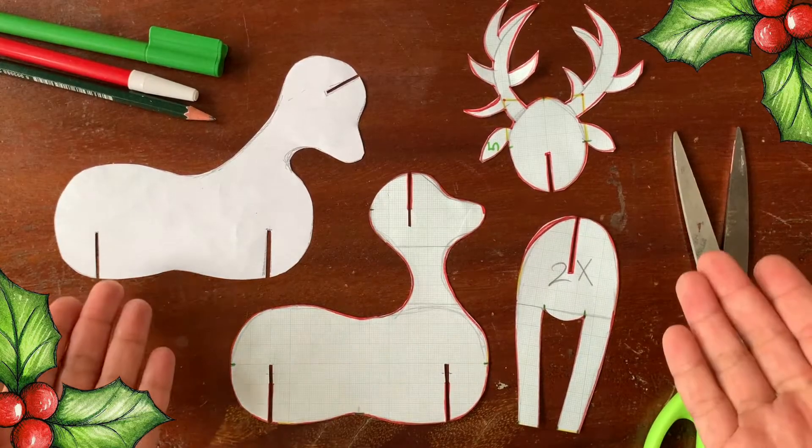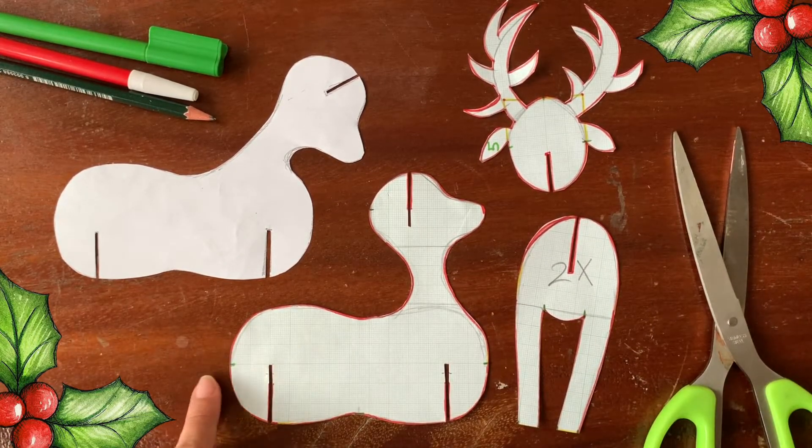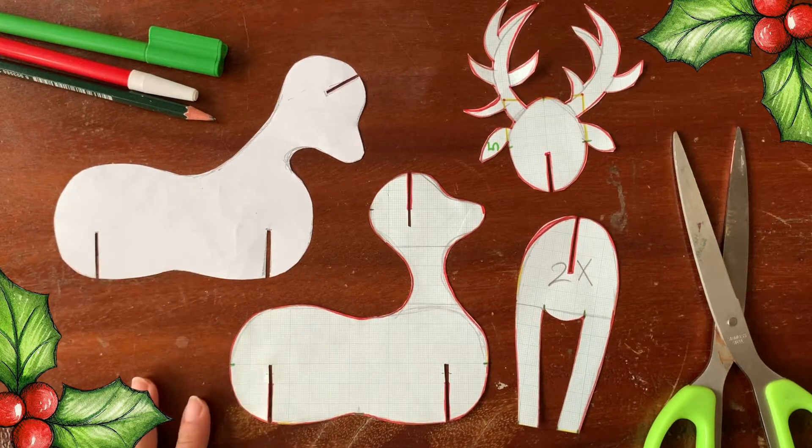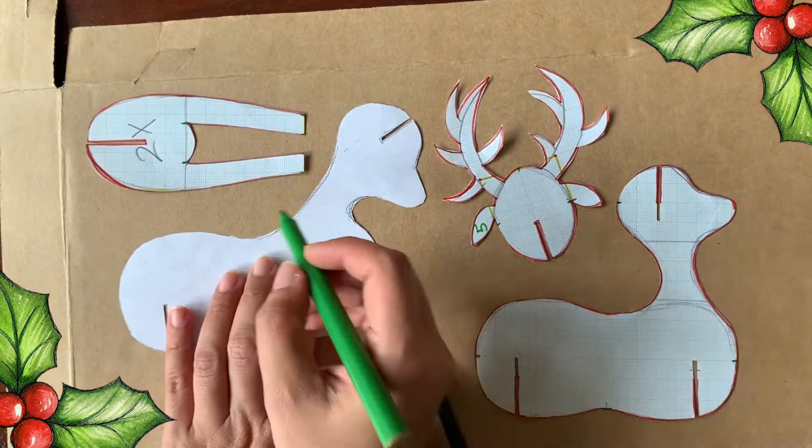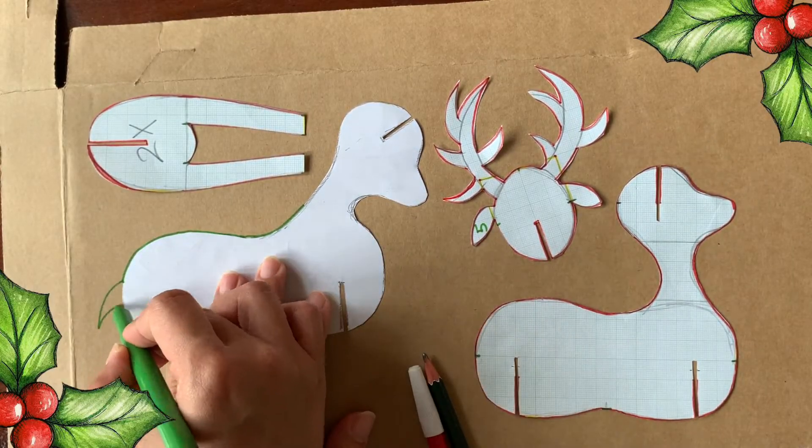All my patterns are done. Let's trace it to the cardboard. But before, I think I forgot something. The tails. Let's just draw it straight to the cardboard. Like this.